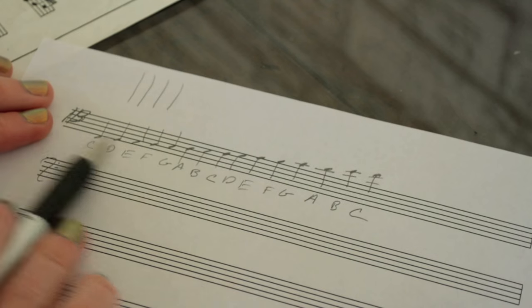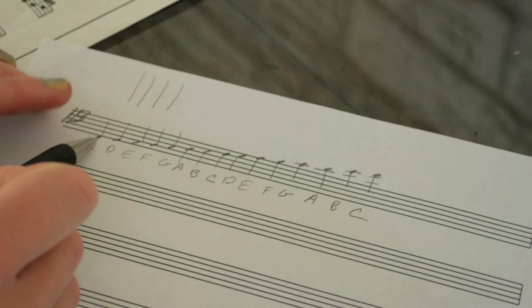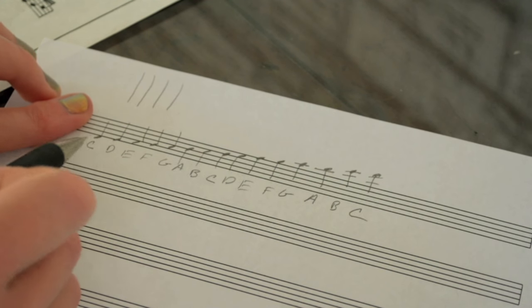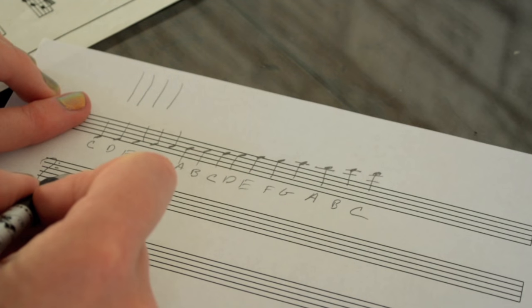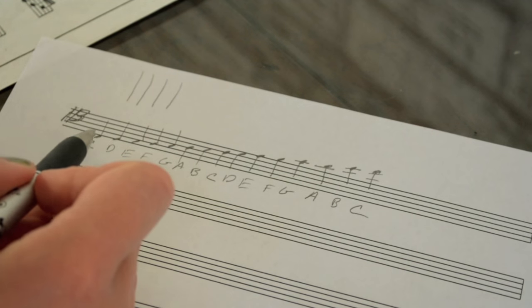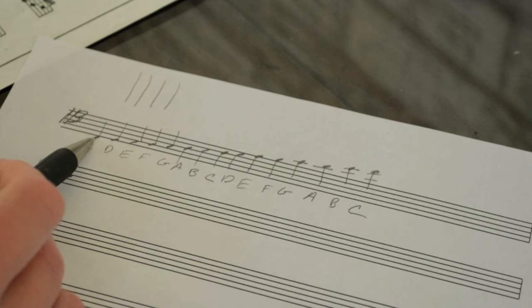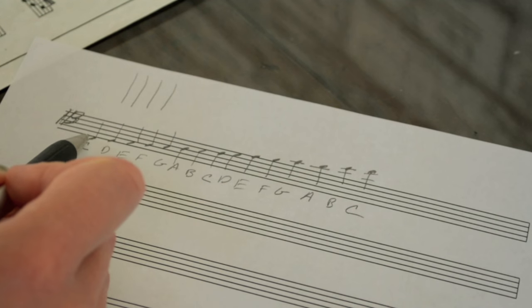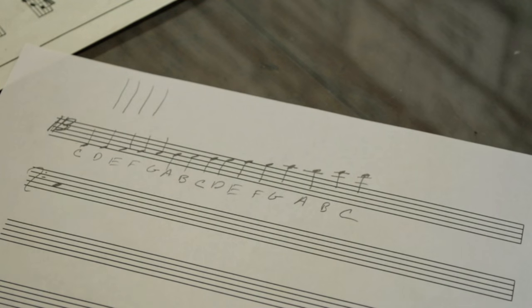So basically what I'm saying is that if we read tenor clef as though it were in bass clef, it would be F4 finger. Now to transpose, so that we are actually playing the note in tenor clef, we're going to move it over a string. So we're actually going to play it right here, fourth finger on the G string. Hopefully that makes sense to you.